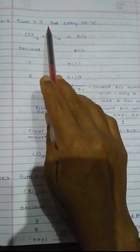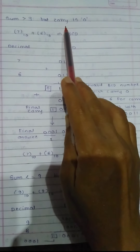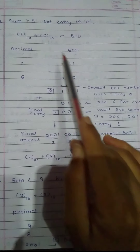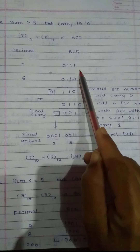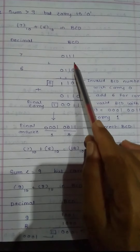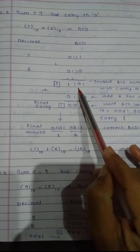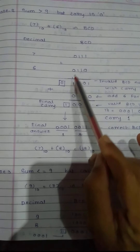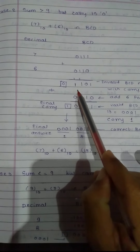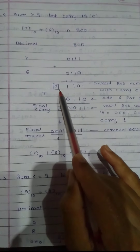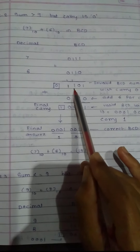Second situation: sum greater than 9 but carry is 0. Example: 7 plus 6. The required answer is 13. Decimal 7 is represented in BCD as 0111, and 6 is represented as 0110. Applying binary addition rules: 1 plus 0 is 1, 1 plus 1 is 0 carry 1, 1 plus 1 is 0 carry 1, 0 plus 0 plus carry is 1. Result is 1101, carry out is 0.